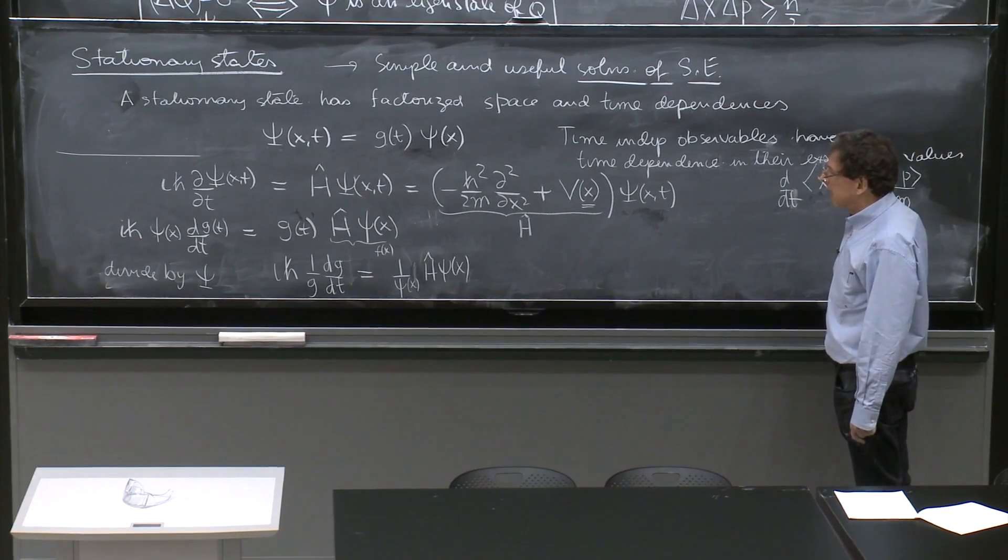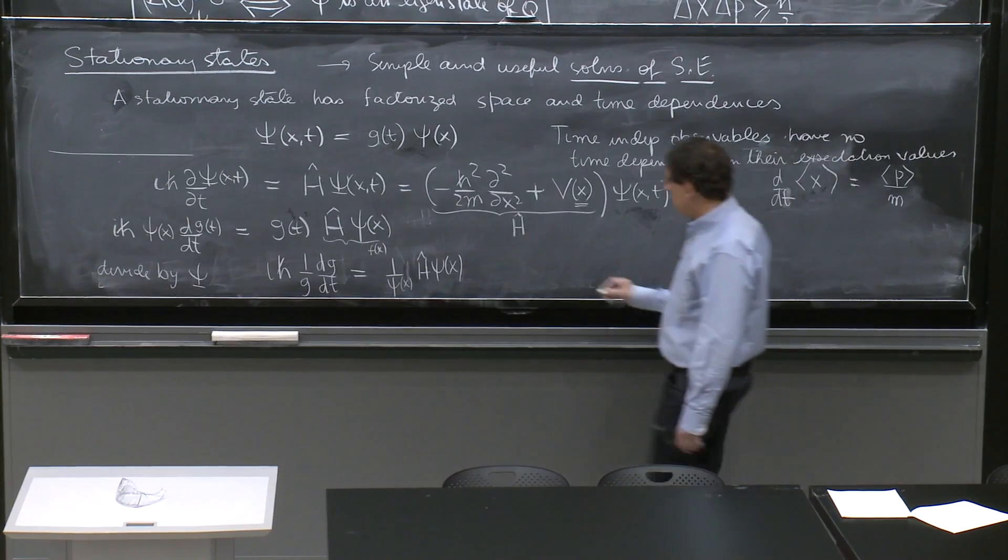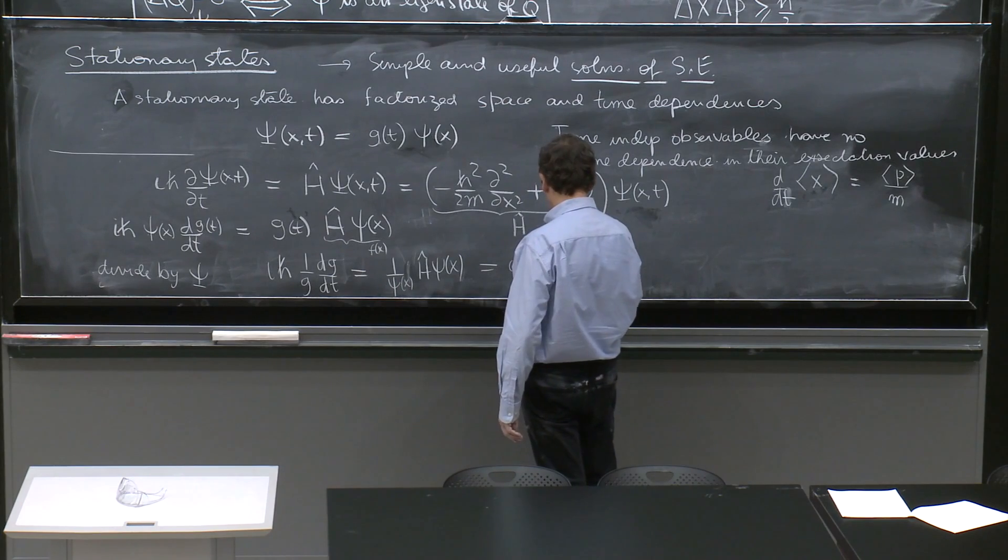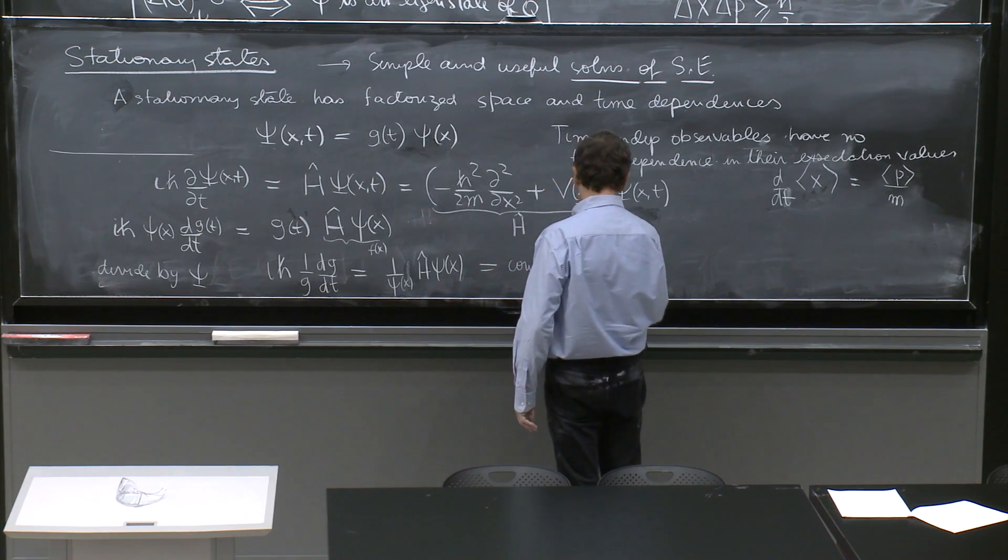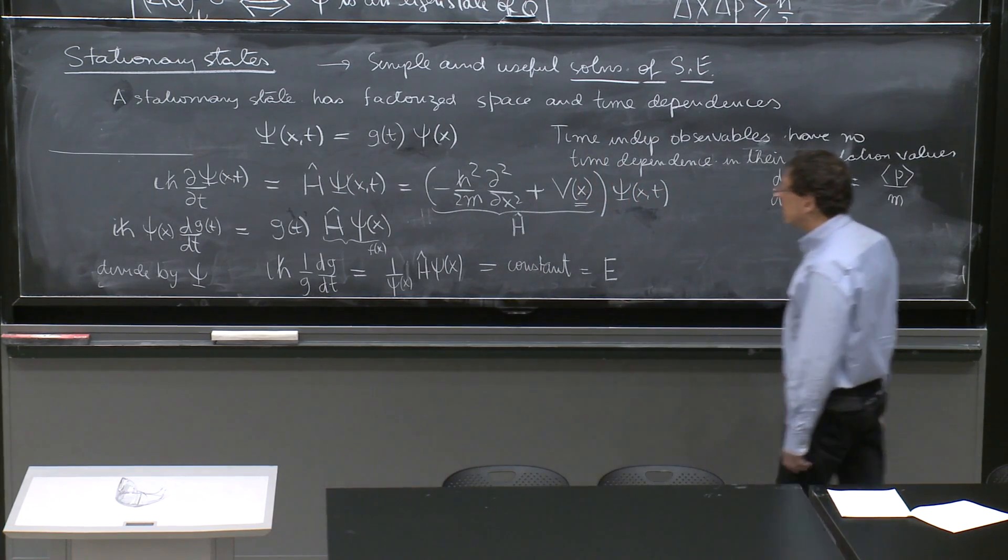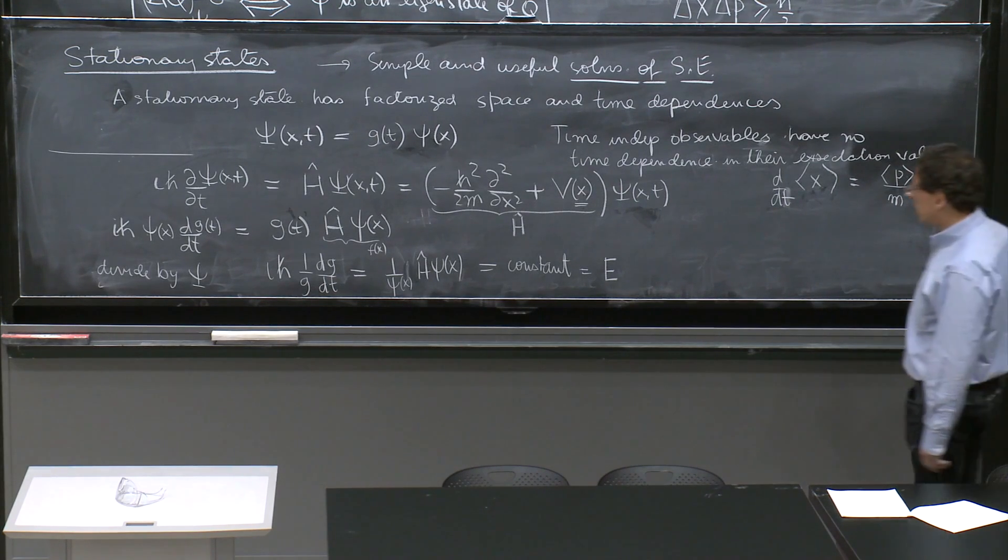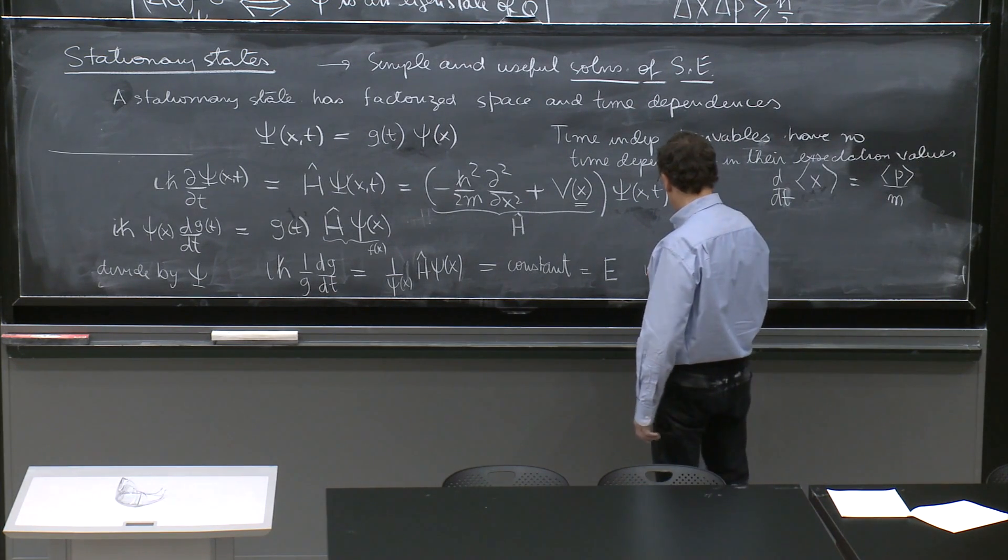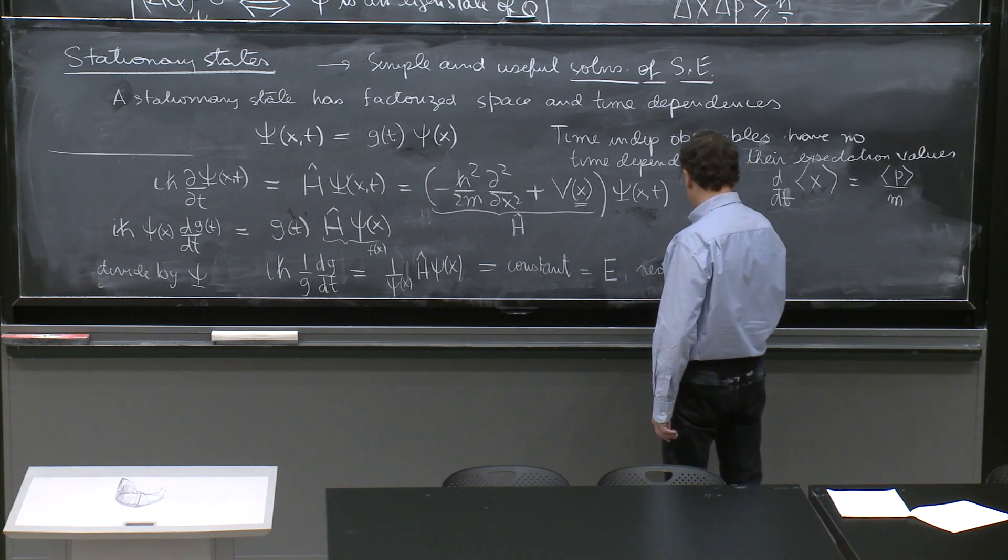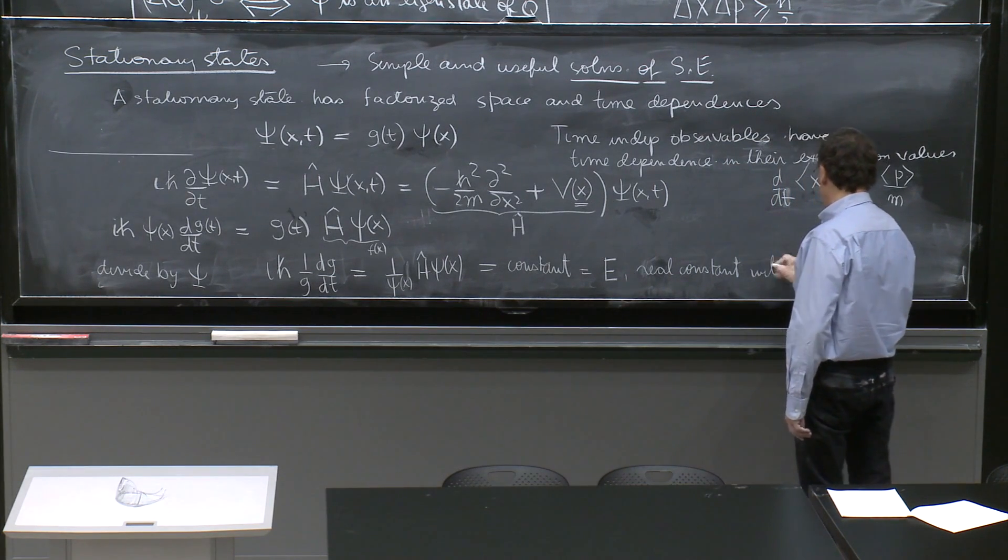Any function of time cannot be equal to a function of x in generality. It just doesn't make sense. So each side must be equal to a constant, and it's the same constant. So each side, this is all equal to a constant, and we'll call the constant E.